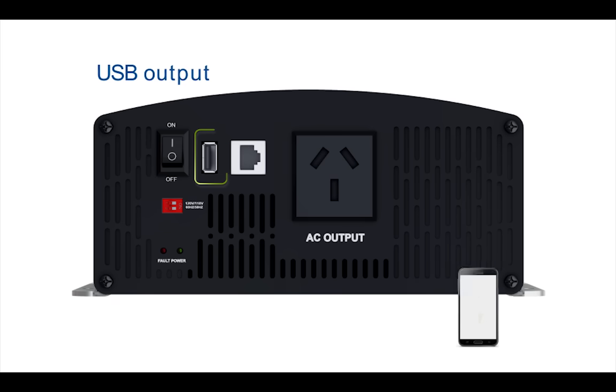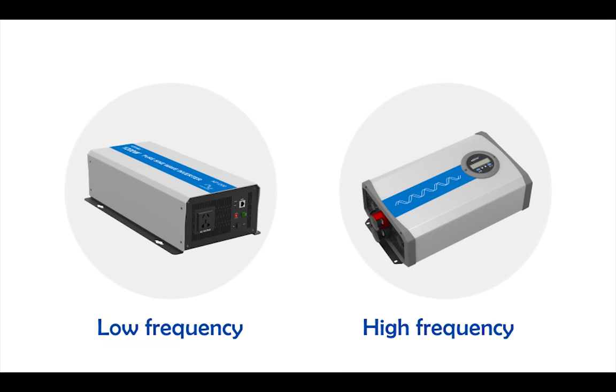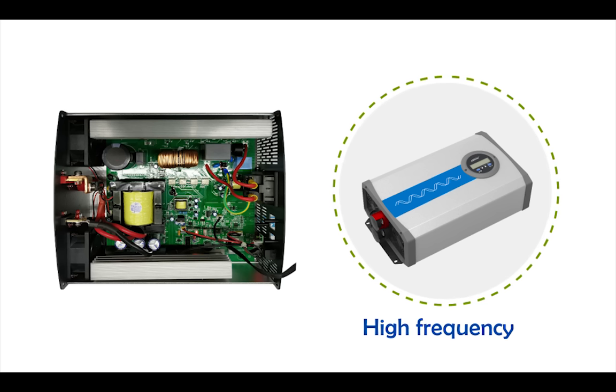Some inverters come with USB output and can be used to charge a mobile phone, for instance. Based on the size, circuit topology, and the working frequency, inverters are categorized into high frequency and low frequency inverters. High frequency inverters have over twice the number of components and use multiple smaller transformers.